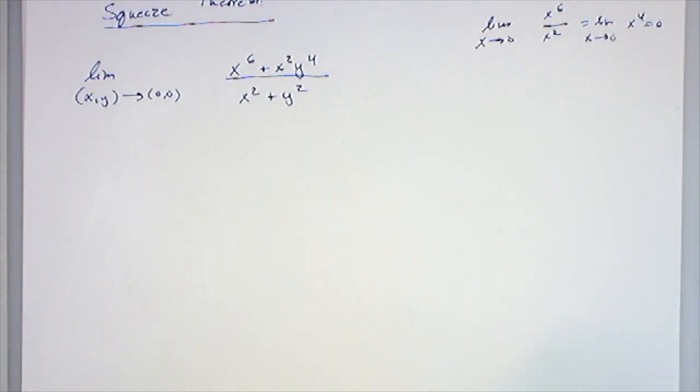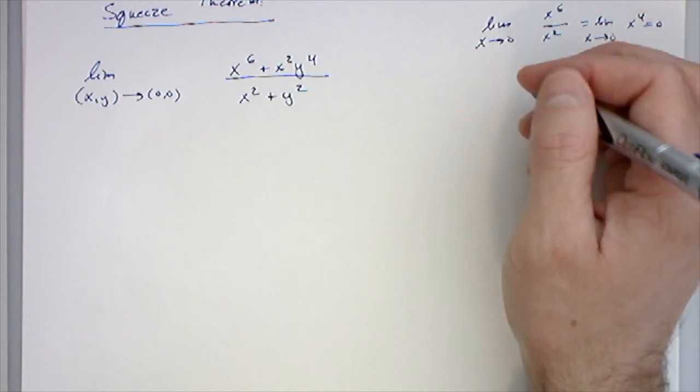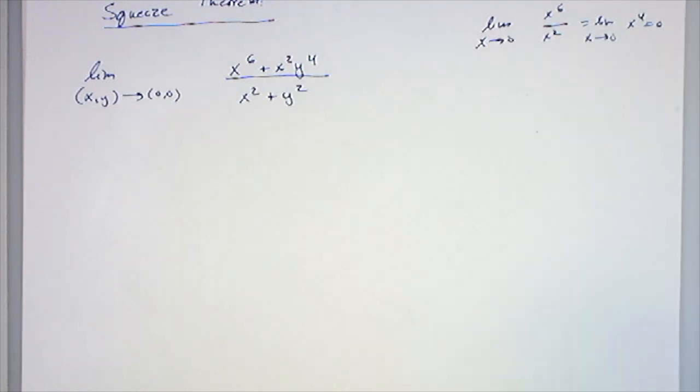We can try some other stuff, like you could try x equal to y, but that's going to give you the same thing. So I don't want to spend our time doing that because I know all the limits are being 0 because the limit exists.